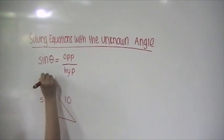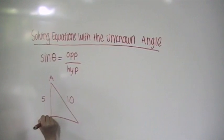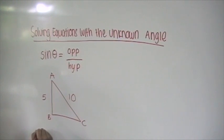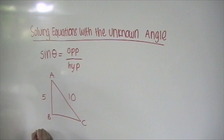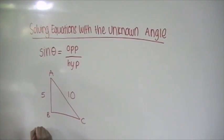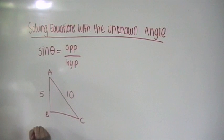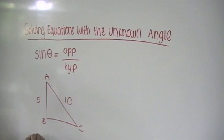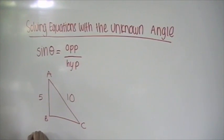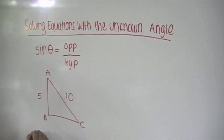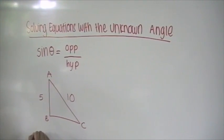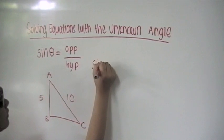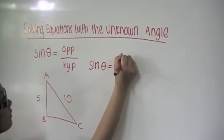The first step is to label each point with a letter. We know that the hypotenuse equals CA as it is the longest side of the triangle. The opposite is the side directly opposite the unknown angle — in this case, it is AB. We now have the needed information to solve, and the equation is set out as sine theta equals 5 over 10.